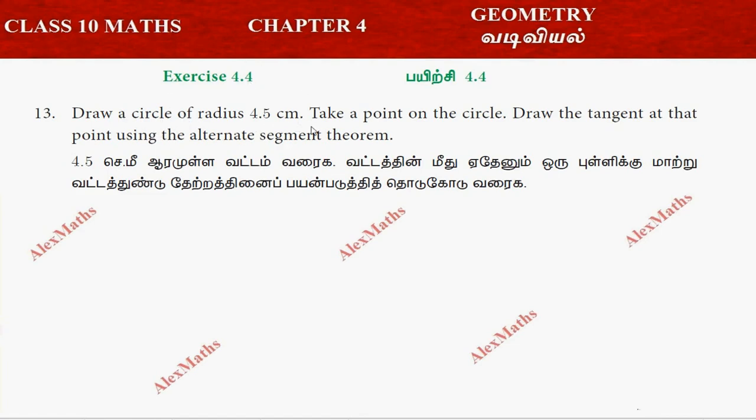Draw a circle of radius 4.5 cm, take a point on the circle, draw the tangent at that point using alternate segment theorem. We have to use the alternate segment theorem to draw the tangent.